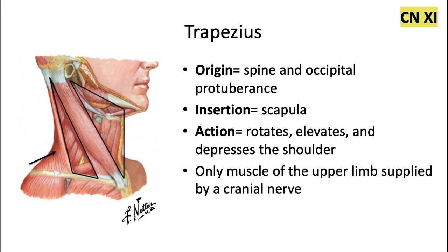And lastly, we have the trapezius muscle. This one originates from the spine, as well as the occipital protuberance at the back of the skull. It inserts into the scapula, which is the shoulder blade, and it rotates, elevates, and depresses the shoulder.